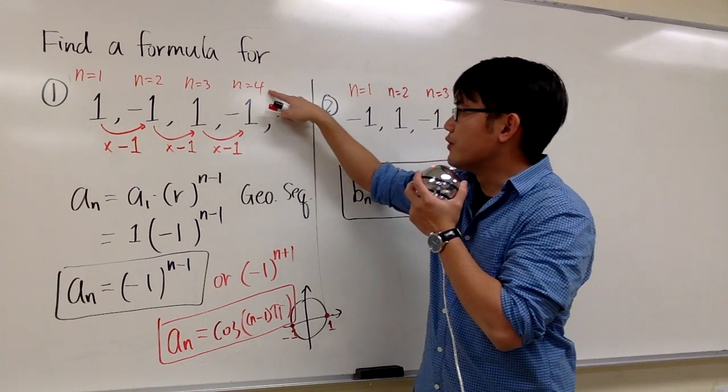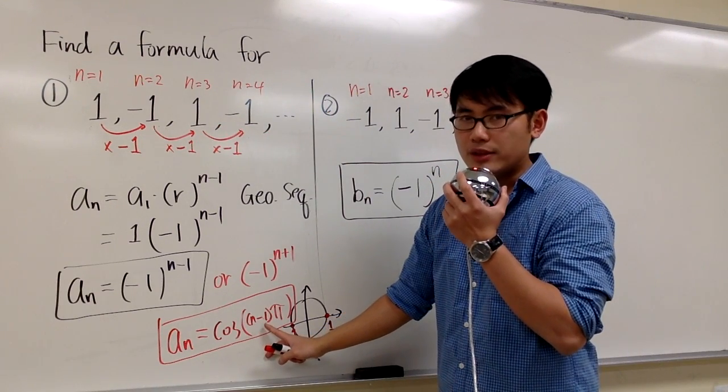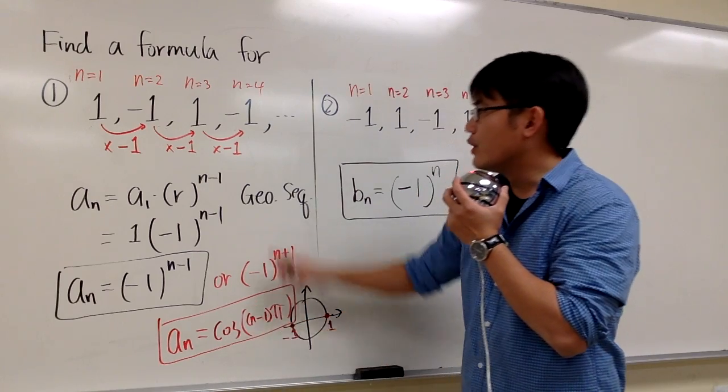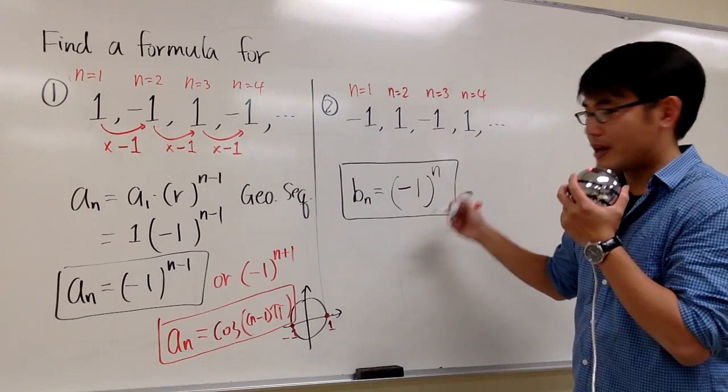You can try it out. For example, if n is equal to 4, plugging 4 into n, 4 minus 1 is 3, cosine of 3pi will also give you negative 1. Right here, if you have negative 1,